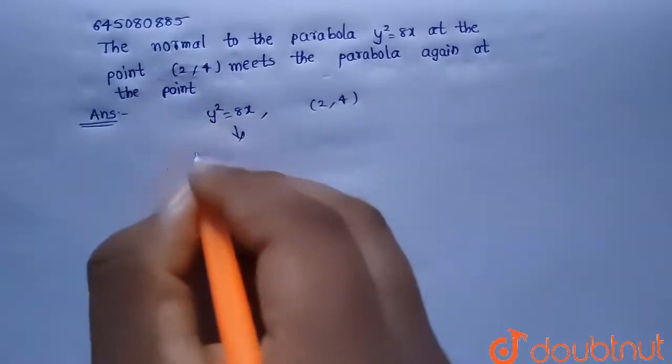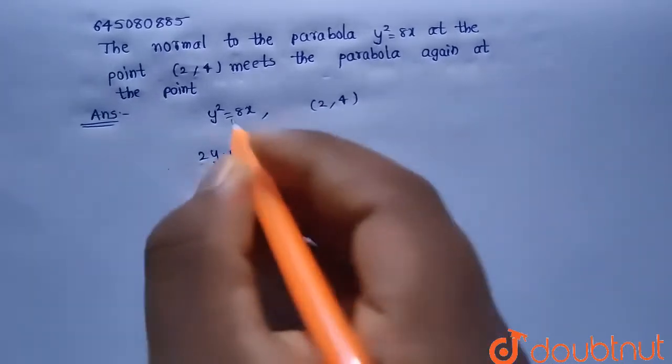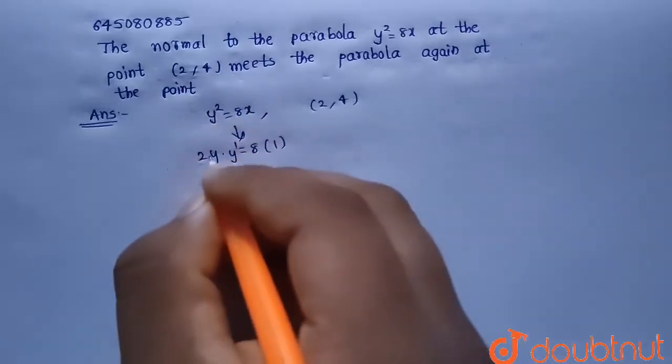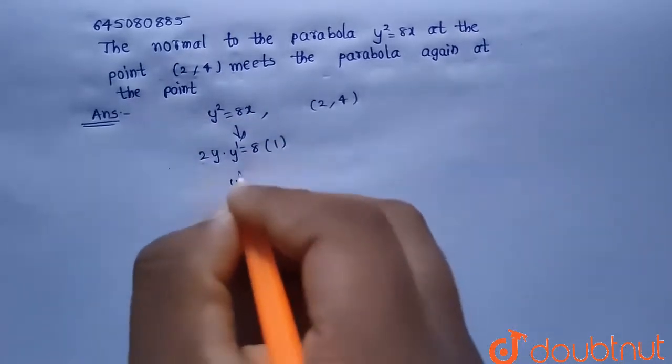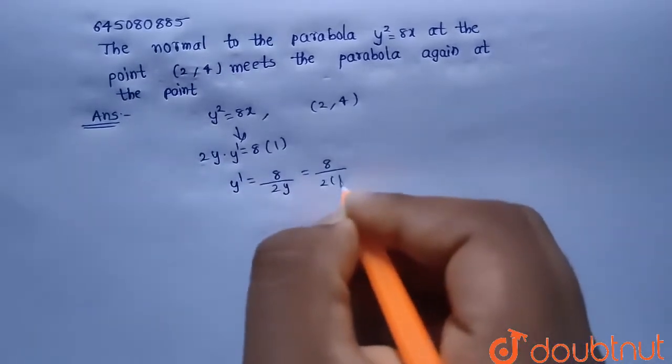So let's differentiate it. 2y·y' = 8·1, because differentiation of x with respect to x is 1 and differentiation of y² will be 2y·y'. From this, y' = 8/2y, that is 8/(2·4).